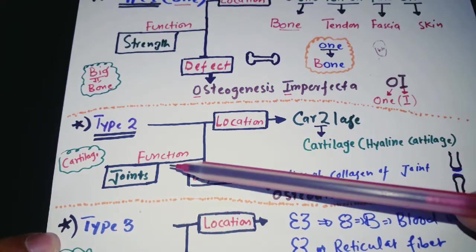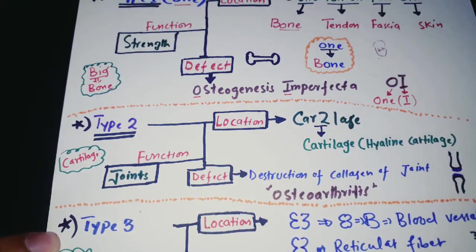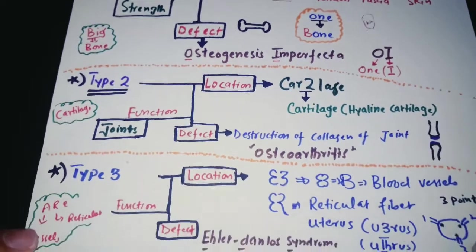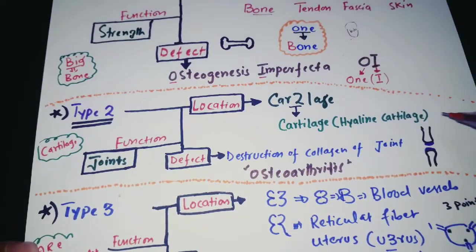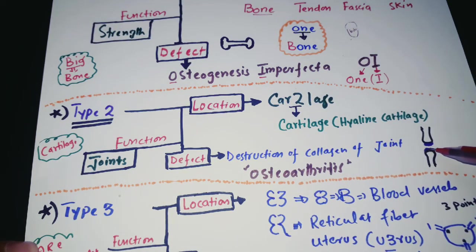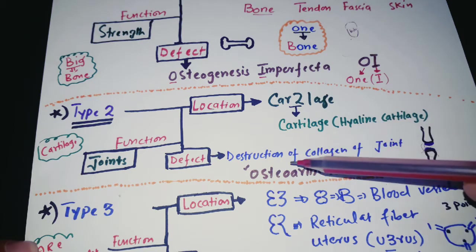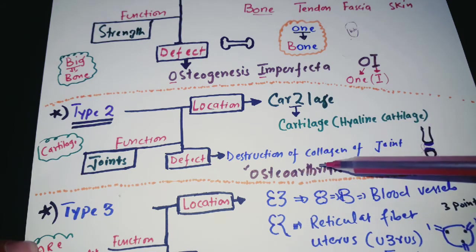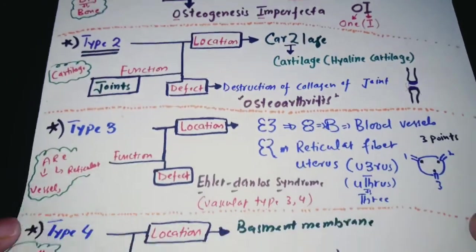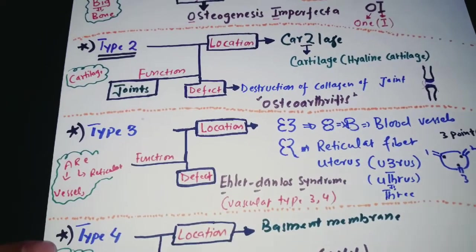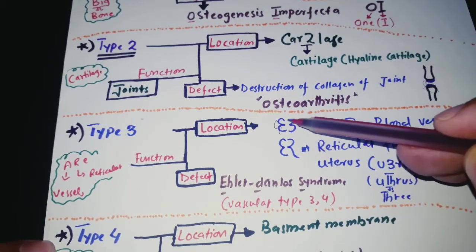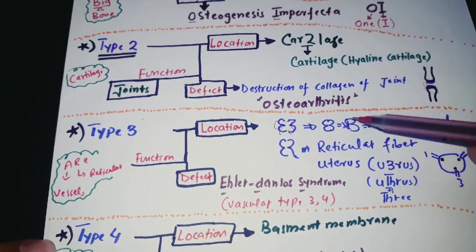Type 2 collagen is found in cartilage — just remember cartilage. Its function is to give strength to the joint, particularly hyaline cartilage and articular cartilage. Destruction of this cartilage on the articular surface of the bone leads to osteoarthritis.